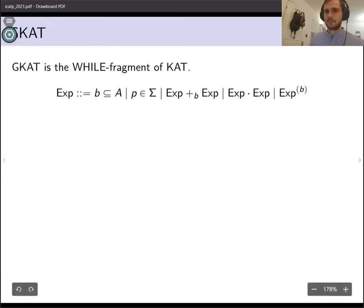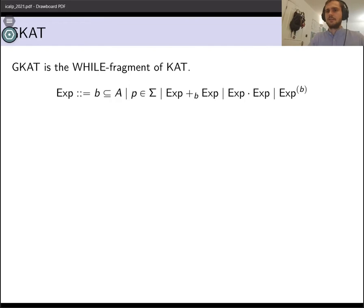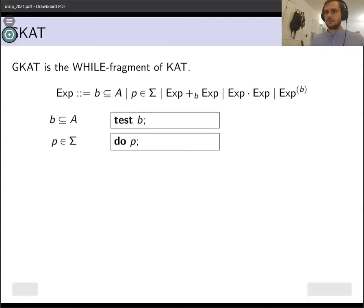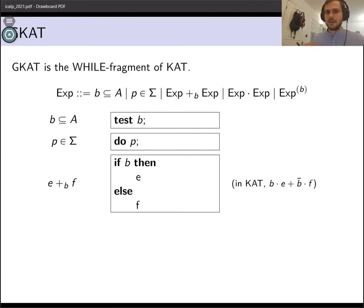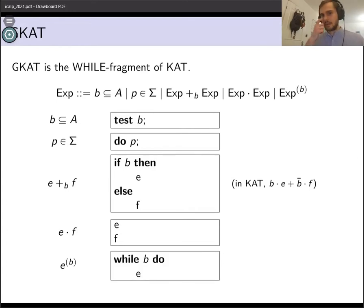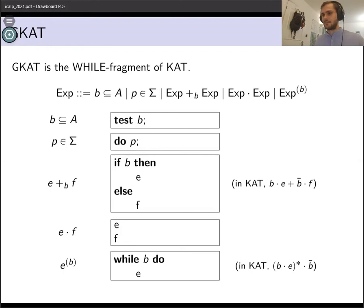Formally speaking, GCAT expressions are terms in the following algebraic signature. Here A is a set of atomic tests and the set Σ contains the basic uninterpreted actions of the language. Programs can also be combined using if-then-else clauses — if you're familiar with KAT, you would write this if-then-else clause in that notation. You can also run programs one after the other using sequential composition, and you can write while loops — looping bits of code in a star-like way — replacing the Kleene star with a Boolean guard. GCAT is just a restriction of KAT to the guarded choice and star operations, as the name indicates.